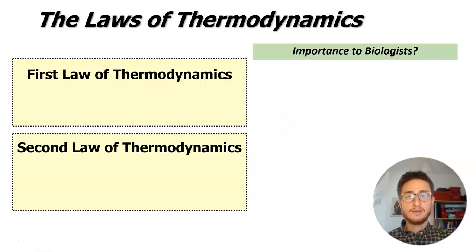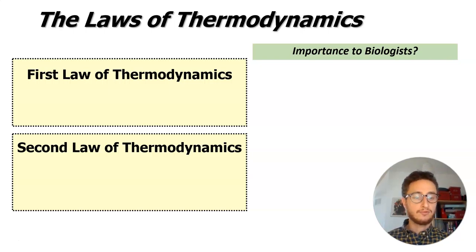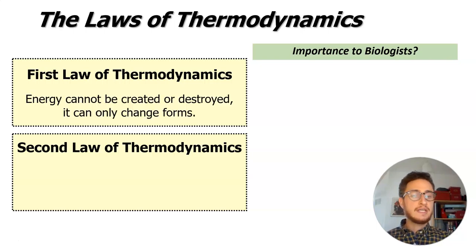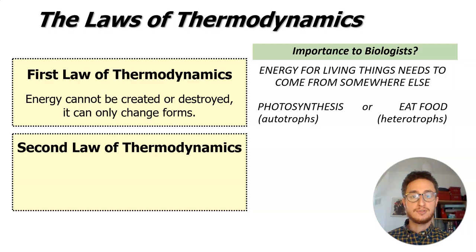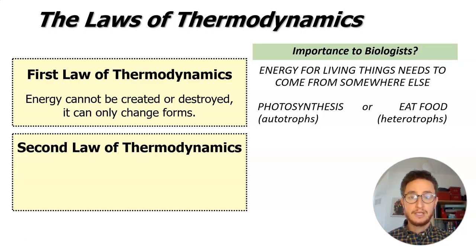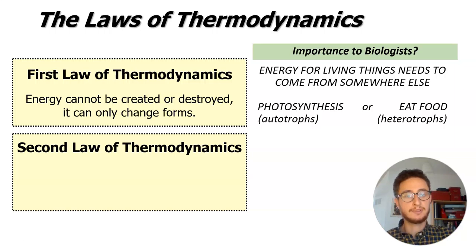Quick recap of where we left off before the March break: we were talking about the laws of thermodynamics, and we said that these are really important for biologists to think about. Energy can't be created or destroyed, and for a biologist, every bit of energy you have and use has got to come from somewhere. Some creatures are autotrophs — the most common types are photosynthetic ones — and they take energy from the sun directly. You and I are heterotrophs, meaning we need to get our energy from food, which at some point down a food chain comes back to photosynthesis. All of that energy comes from the sun, gets trapped into some living thing, and can eventually get passed on to you.